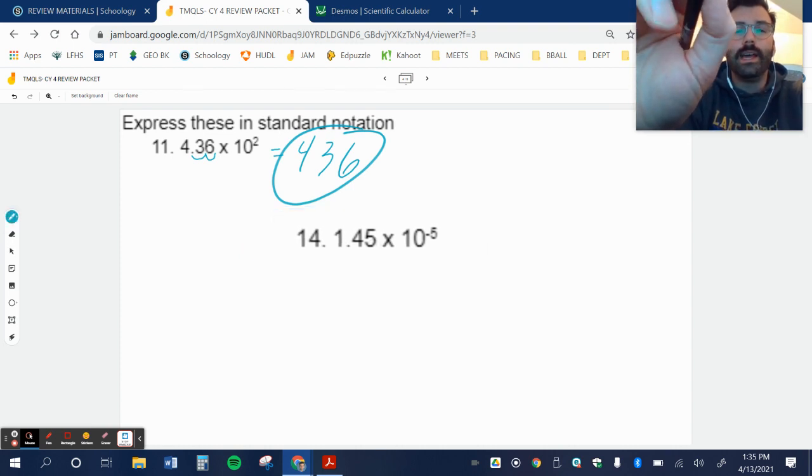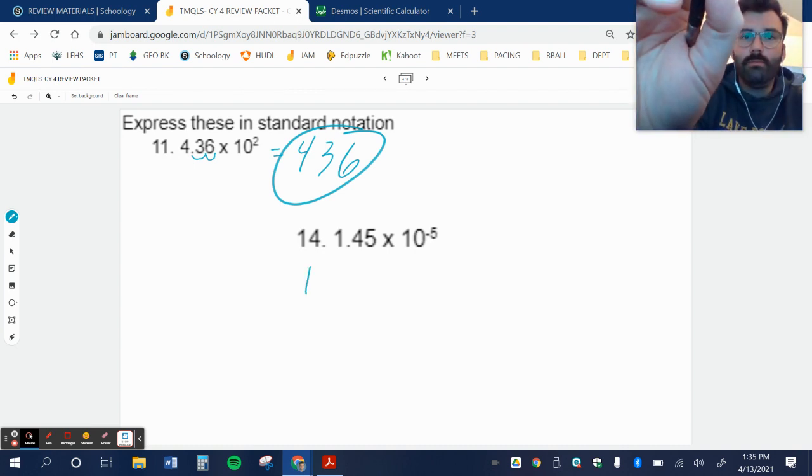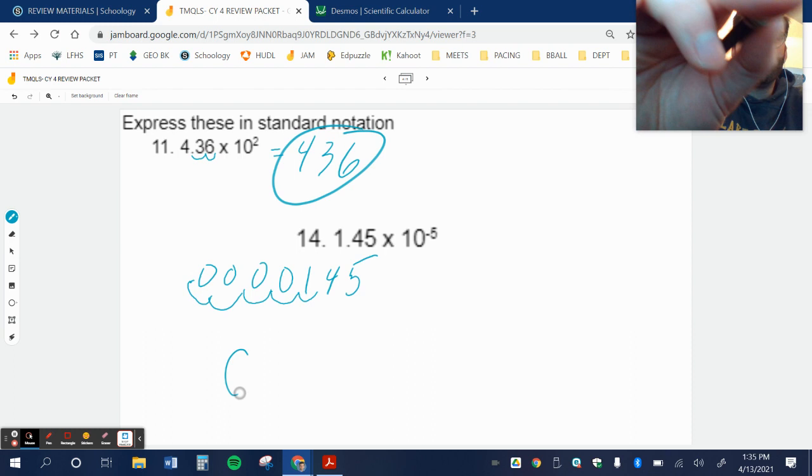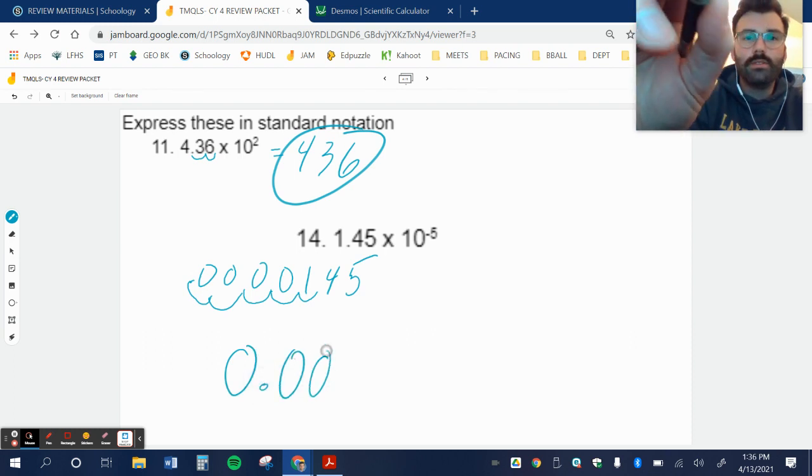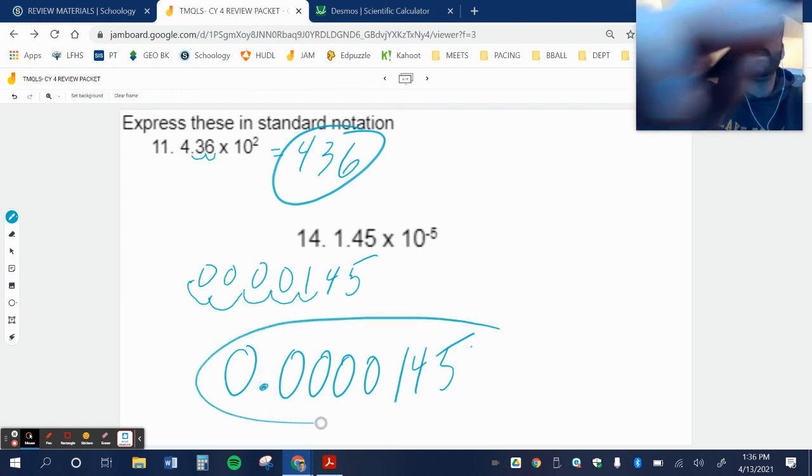All right, this next one, I got to move it negative 5 times, meaning 5 times to the left. So I got 1, 4, 5. I'm going to move it 5 times: one, two, no spot, put a 0, three, four, five. So my answer is 0.00145. Boom, that wasn't too bad.